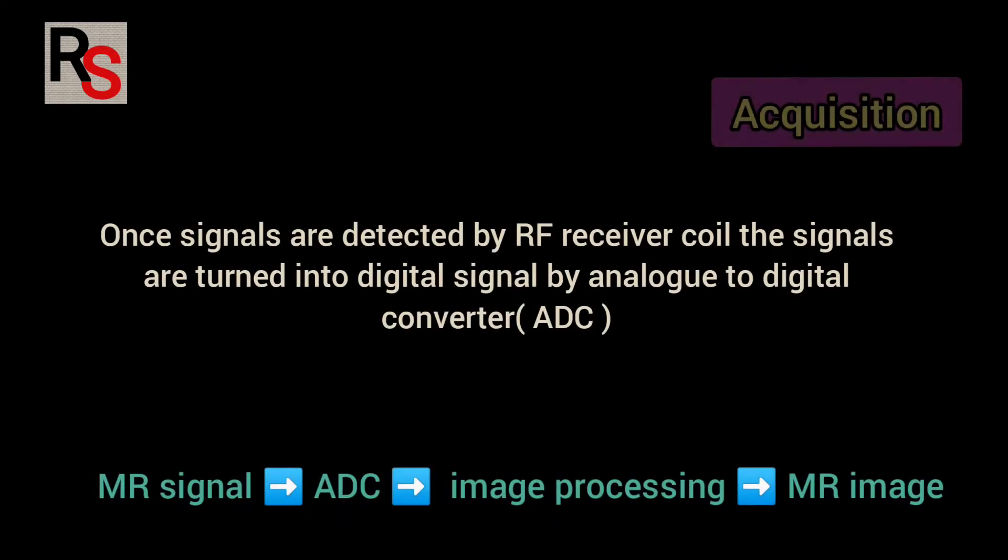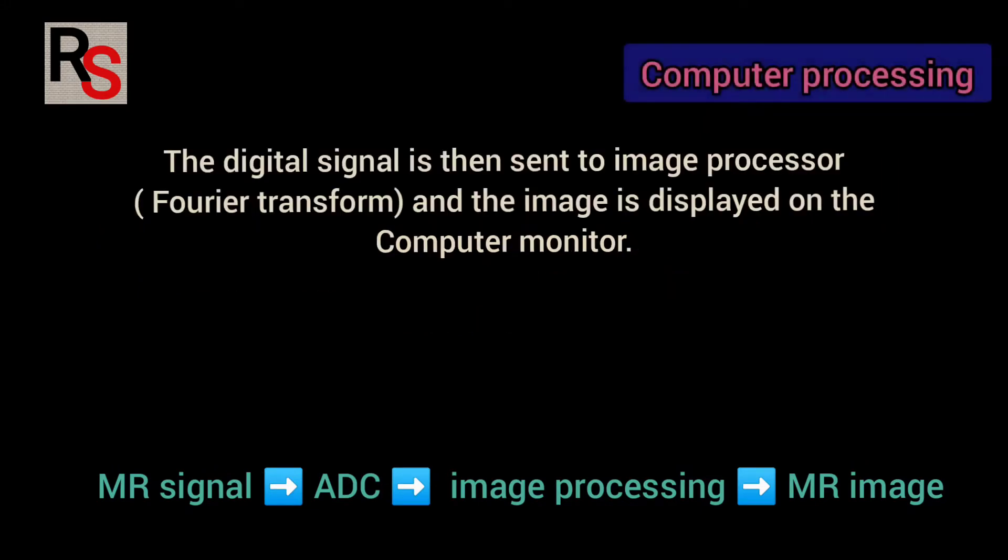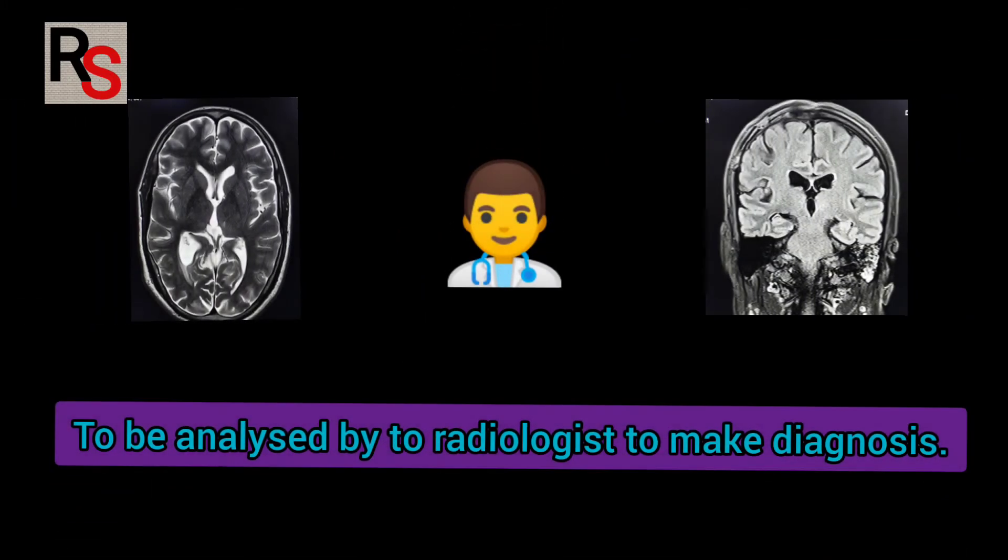Once signals are detected by the RF receiver coil, these signals are turned into digital signals by analog to digital converter. The digital signals are then sent to image processor for Fourier transformation. And the image is displayed on the monitor to be analyzed by the radiologist to make diagnosis.